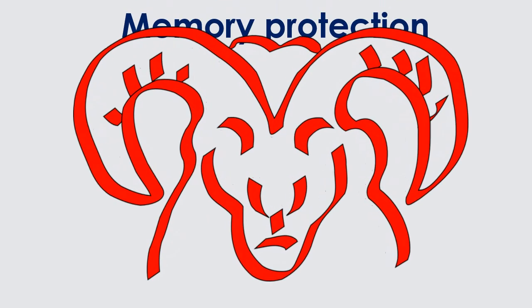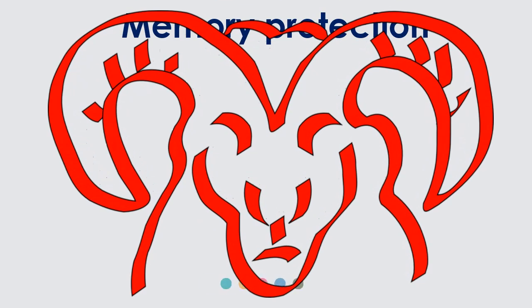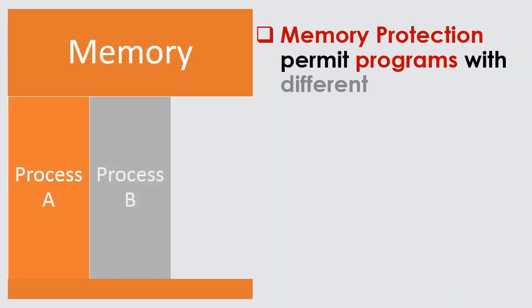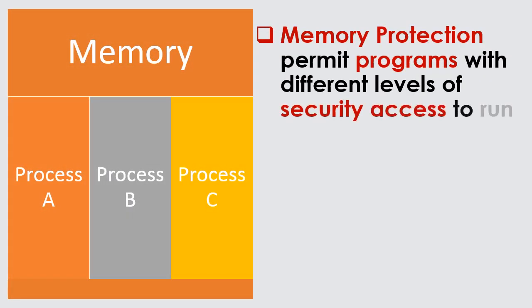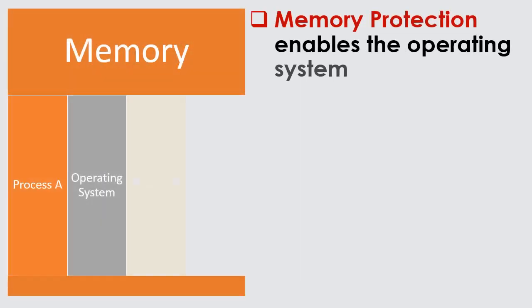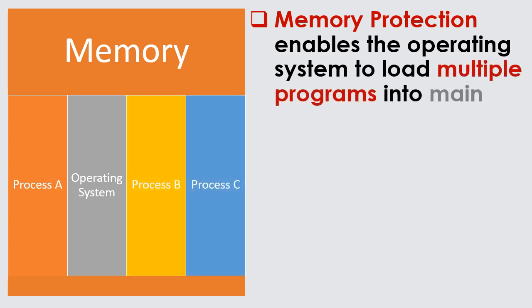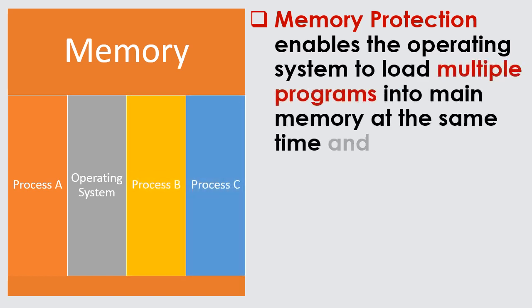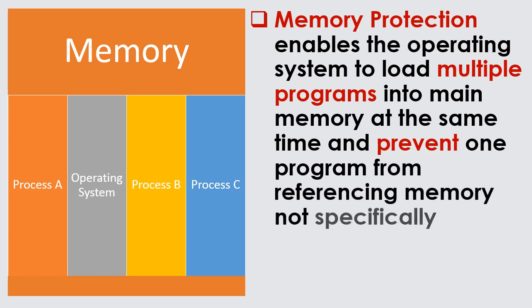Memory protection permits programs with different levels of security access to run at the same time. It enables the operating system to load multiple programs into main memory at the same time and prevent one program from referencing memory not specifically assigned to it.